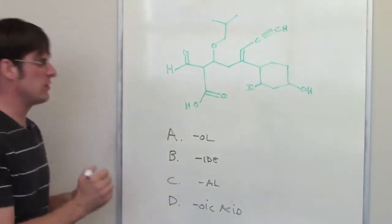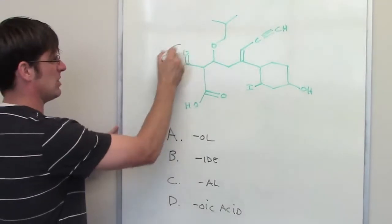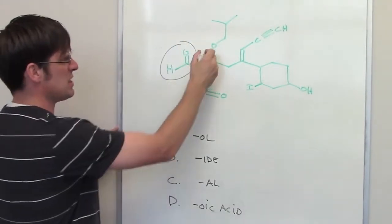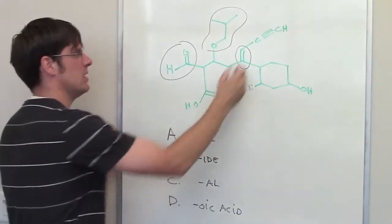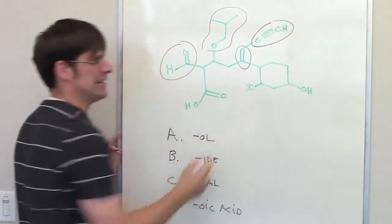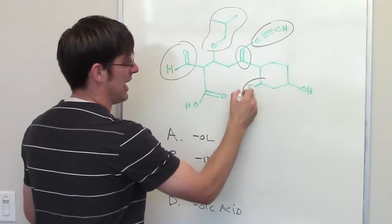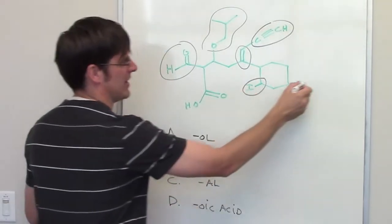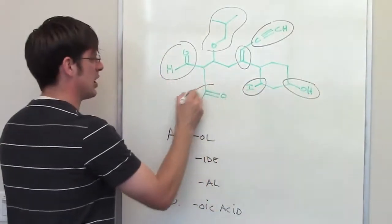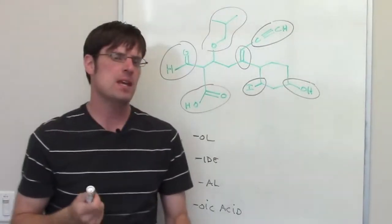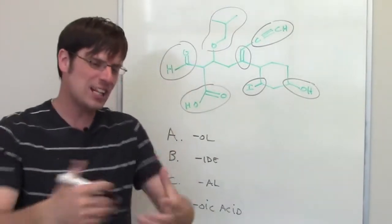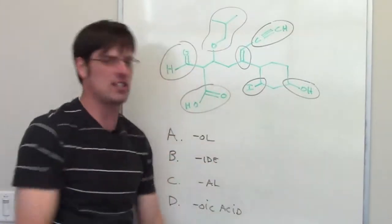You will notice that there are lots of different functional groups. I have got an aldehyde over here, and I have got an ether up here. I have got an alkene, that is a carbon-carbon double bond there. I have got a carbon-carbon triple, an alkyne there. I have got an alkyl iodide, that is a halide over there. I have got an alcohol over here. I have got a carboxylic acid down there. So, I have got all these different functional groups.